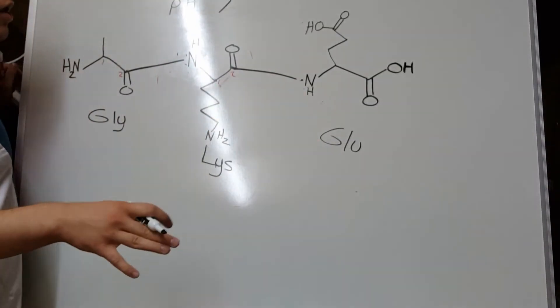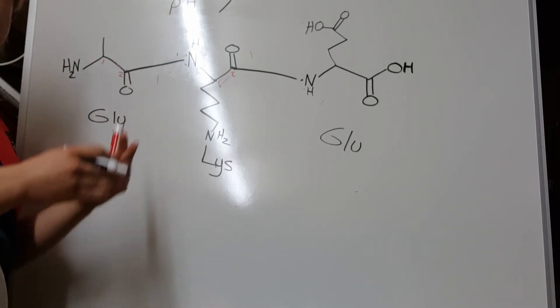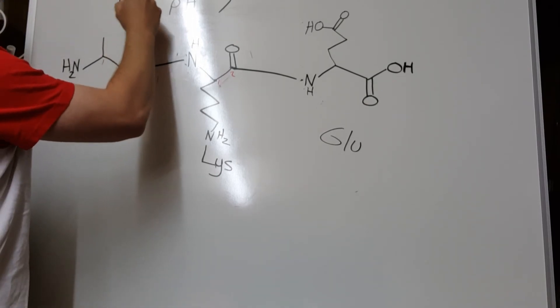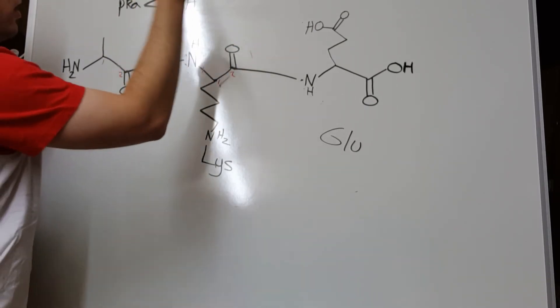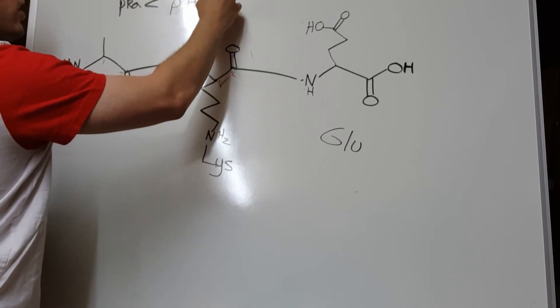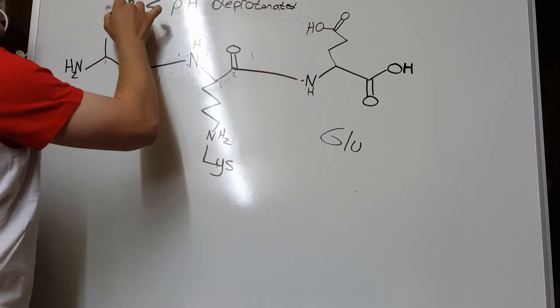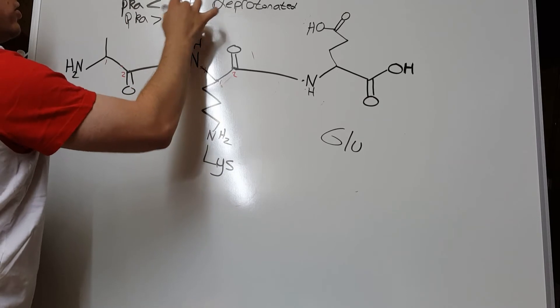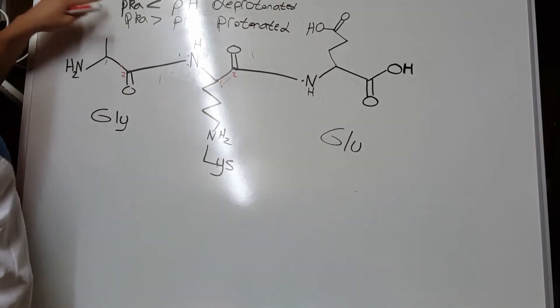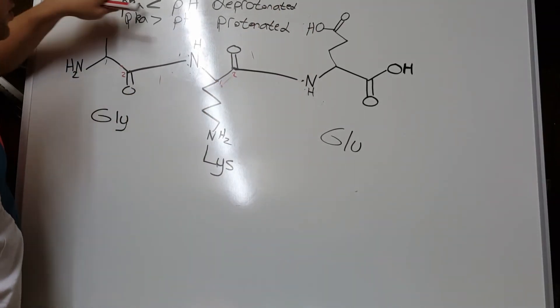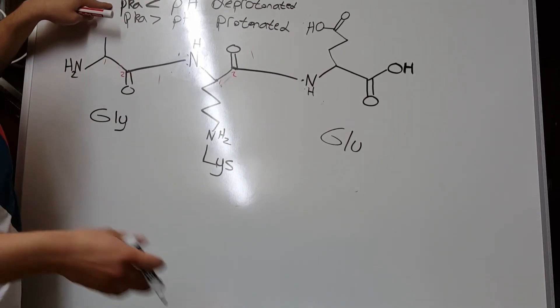So, one thing to always remember about pKa versus pH is that when pKa is less than pH, you are going to be deprotonated. And when pKa is greater than pH, you will be protonated. And that makes sense because if your pKa is low, that means you're acidic relative to what you're dissolved in. So, if you're an acid surrounded in base, what happens to you? You lose your proton.